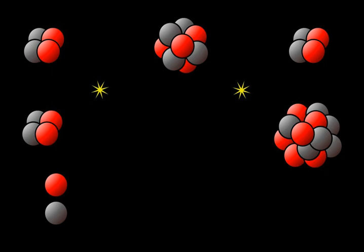Triple alpha process in stars. Helium accumulates in the core of stars as a result of the proton-proton chain reaction and the carbon-nitrogen-oxygen cycle. Further nuclear fusion reactions of helium with hydrogen or another alpha particle produce lithium-5 and beryllium-8 respectively.